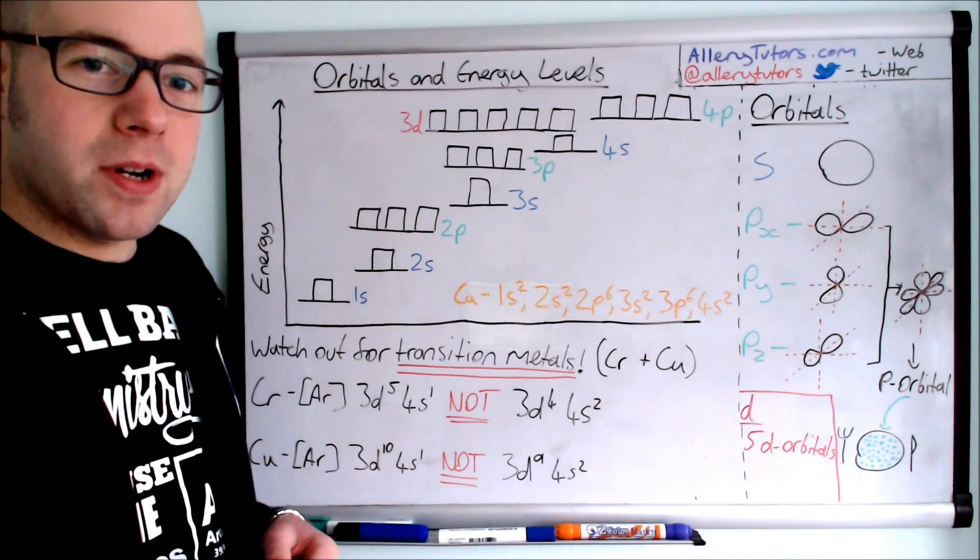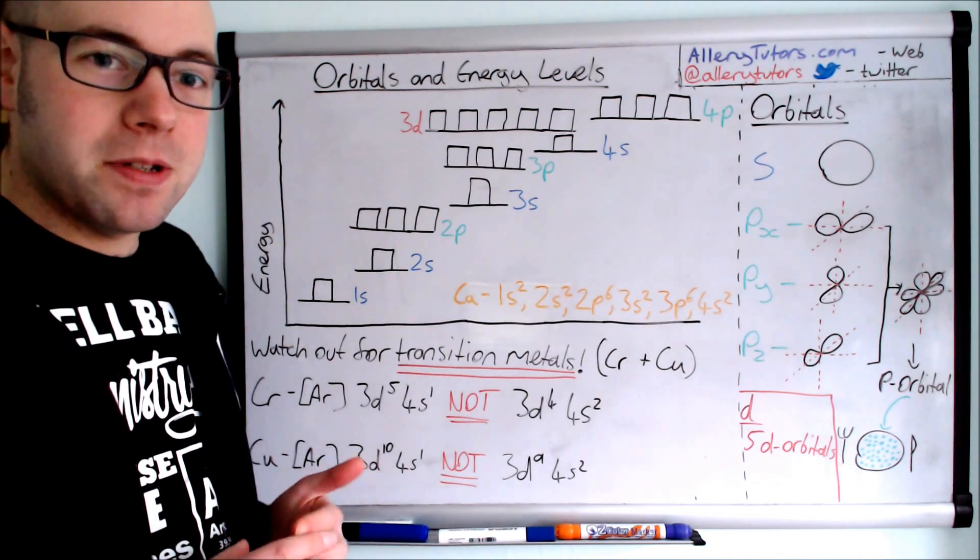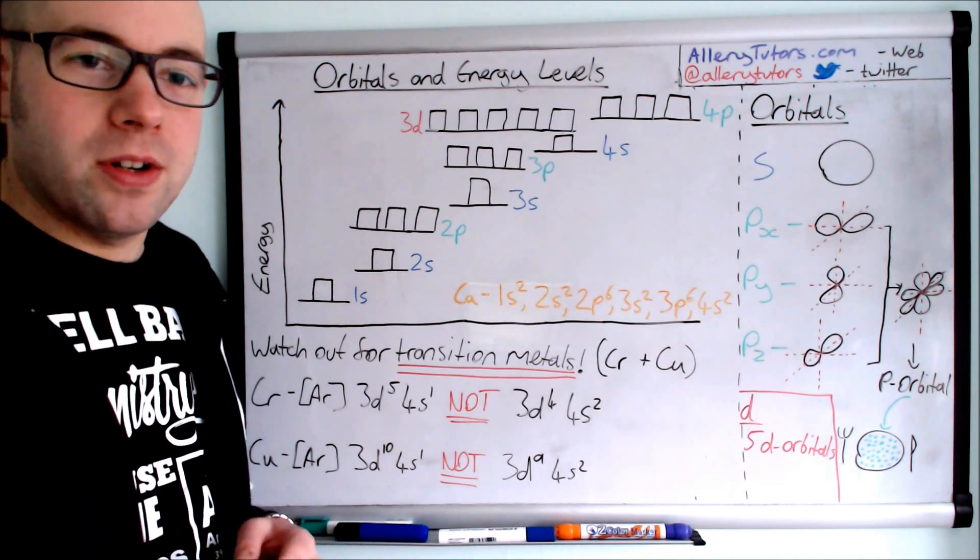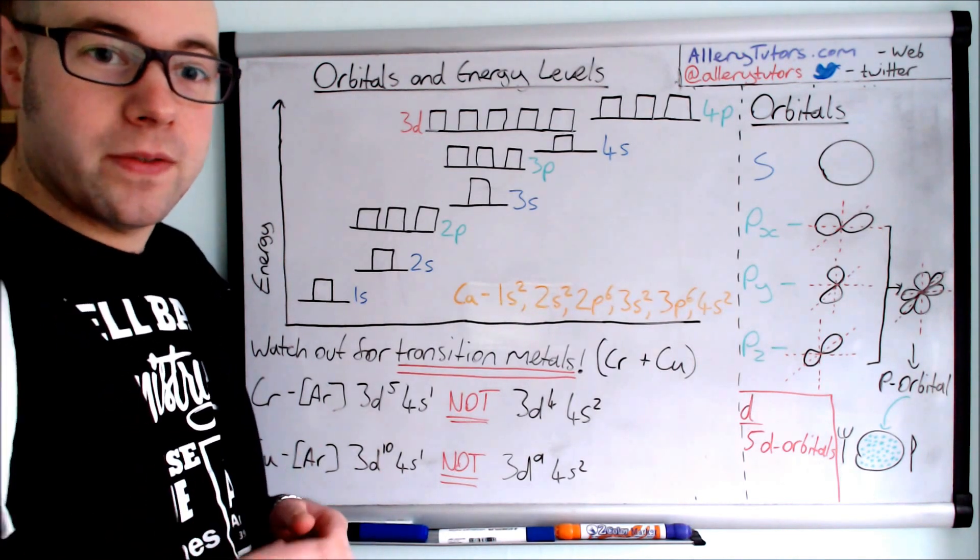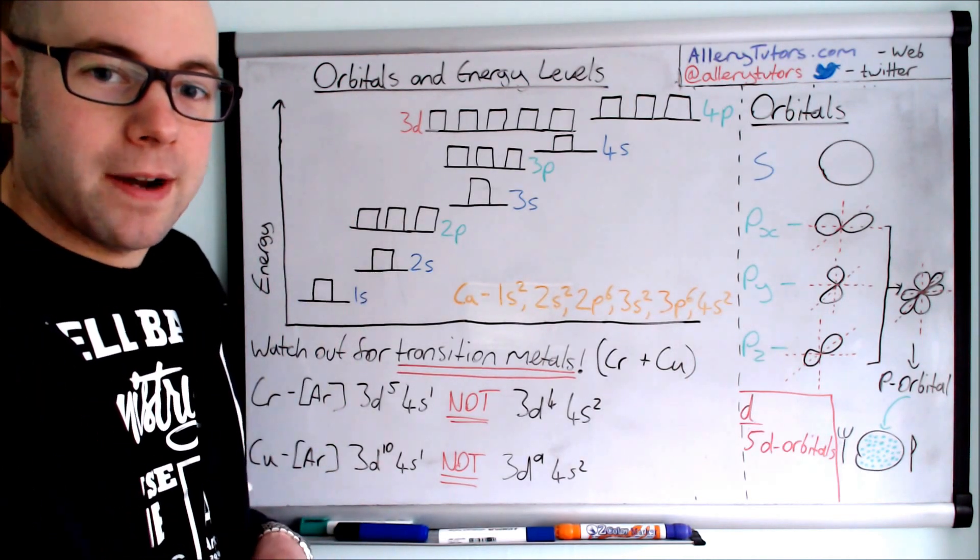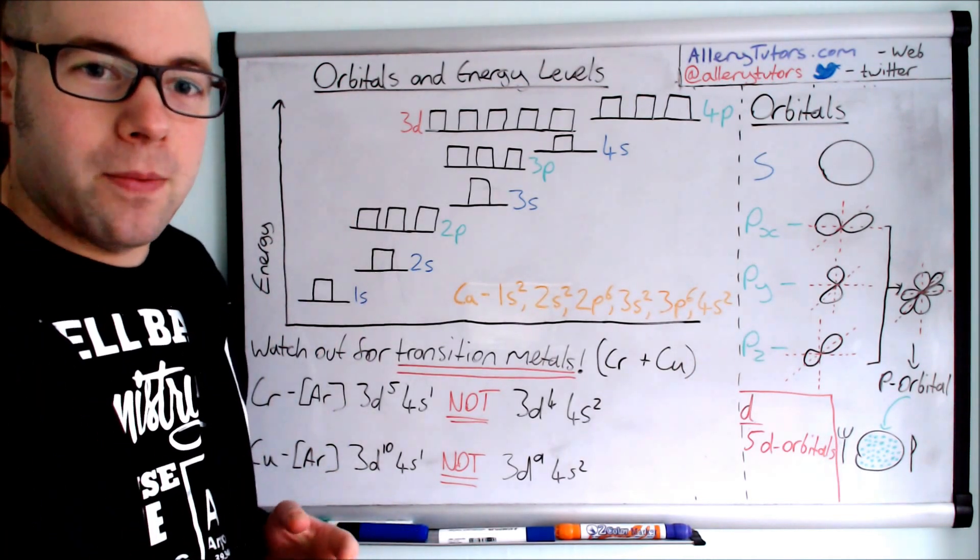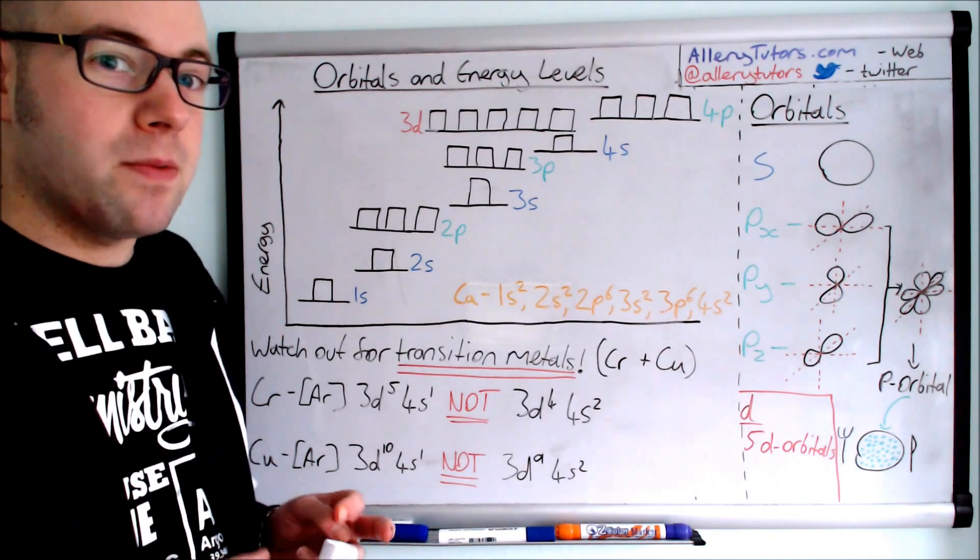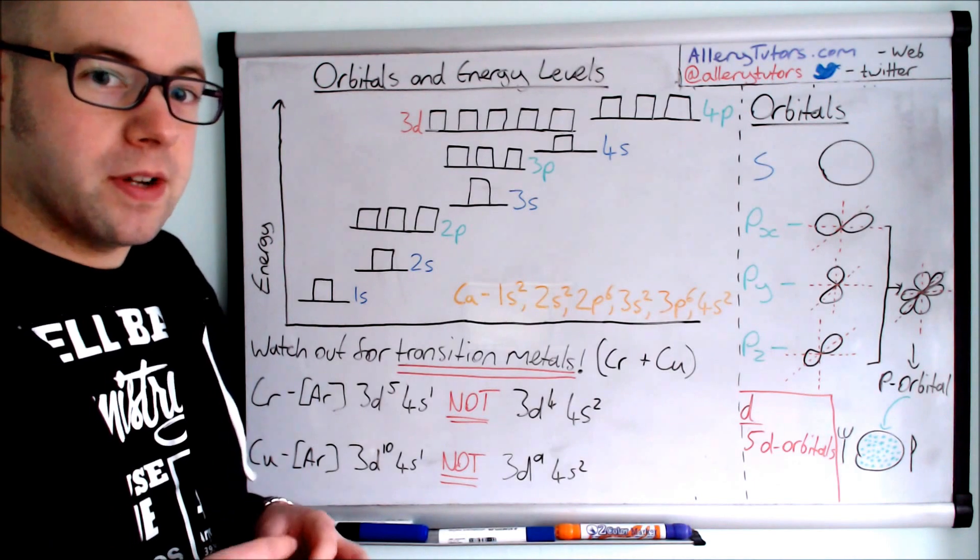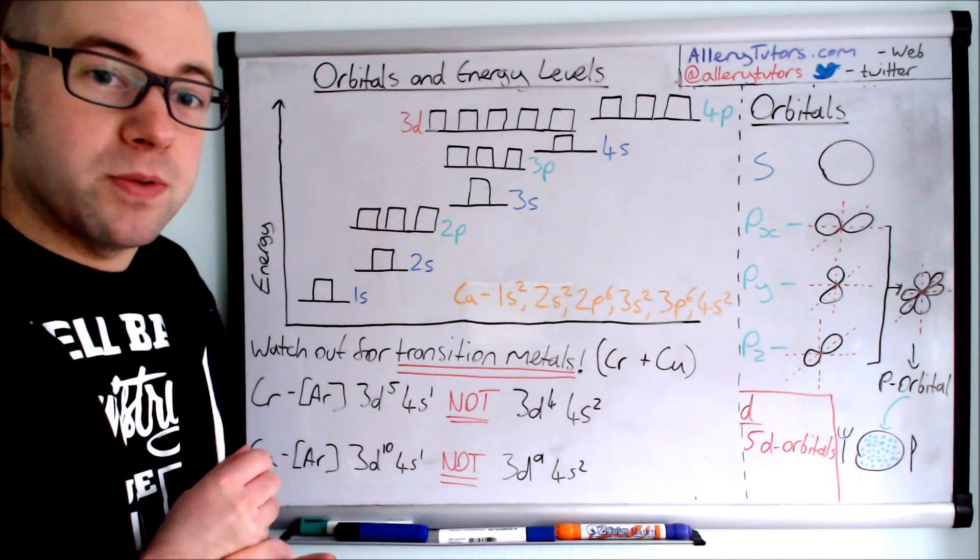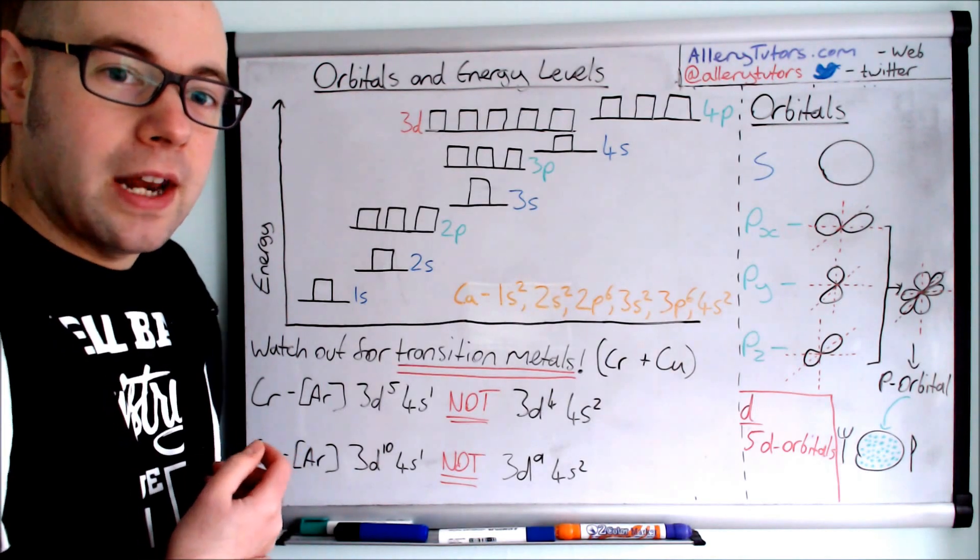In this video we're going to look at the different types of orbitals that make up atoms and where these orbitals fit in with energy levels. We're also going to show you an energy level diagram and link that with electron configurations of elements and help explain some unusual electron configurations, in particular chromium and copper, which were mentioned in the video on electron configuration.